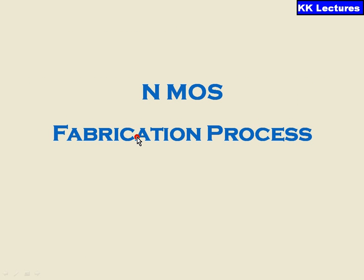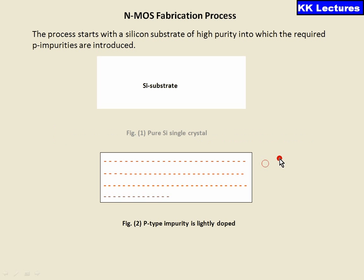Now let us see what exactly the NMOS fabrication process is. Fabrication means a step-by-step procedure for how we physically manufacture the NMOS transistor. Here we are going to see the NMOS enhancement mode transistor fabrication. We start with a silicon substrate of high purity into which the required P-type impurities are added to make a P-type substrate. The P-type impurities are lightly doped because if heavily doped, it becomes more positive. So we lightly dope by adding P-type material to a silicon substrate.